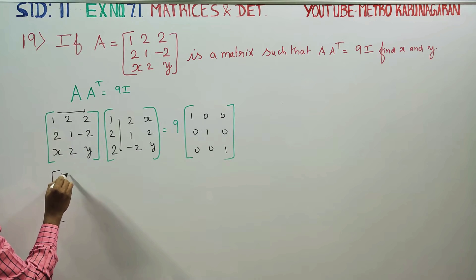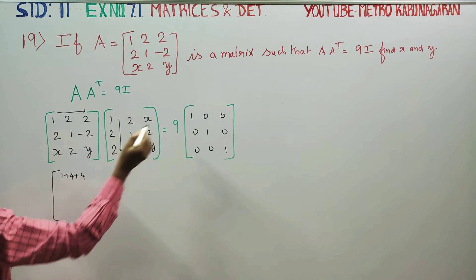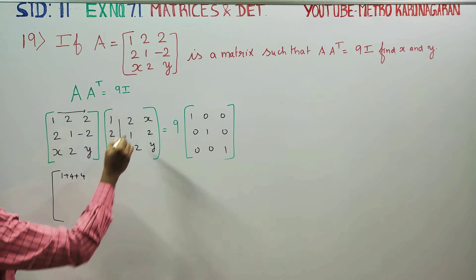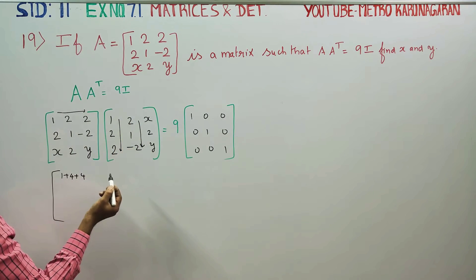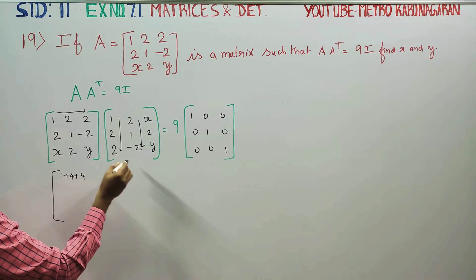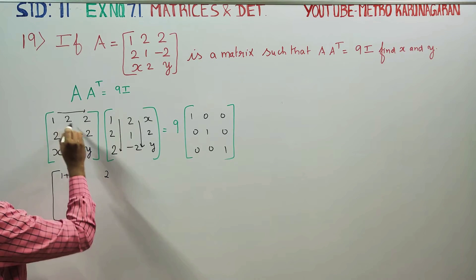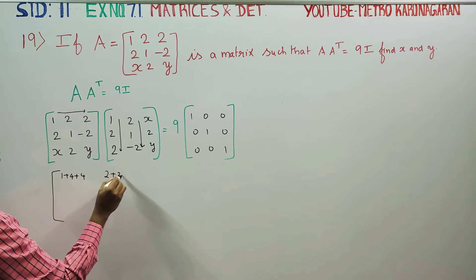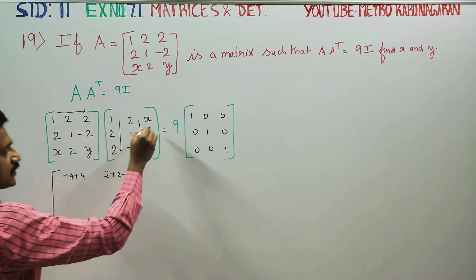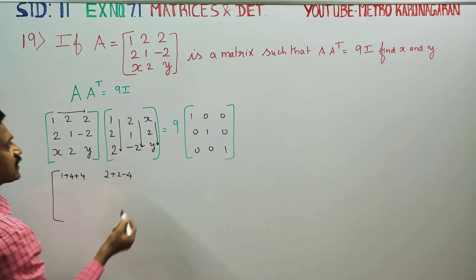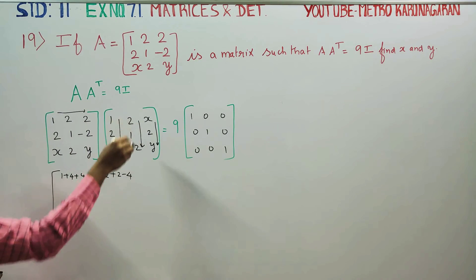1 plus 4 plus 4, it's 9. 9 is 9. 0 is 0. 1, 2 is 2. This is 1, 2 is 2 minus 4. I have x, 2, y. This is the last column.